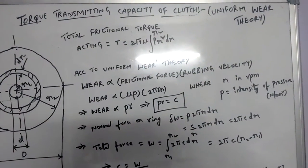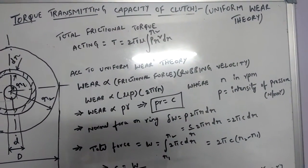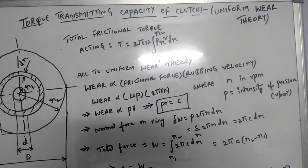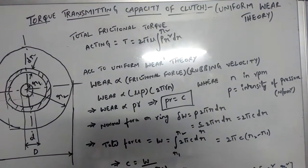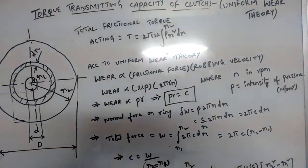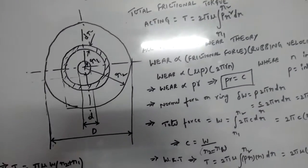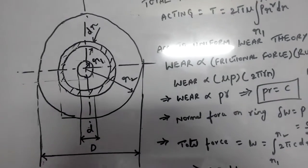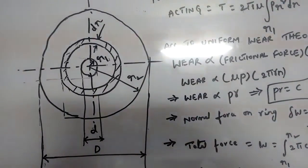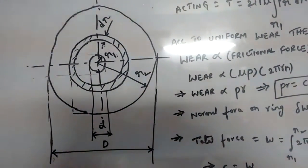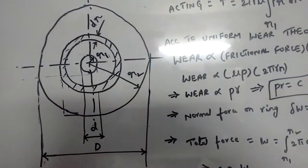We will discuss the torque transmitting capacity of a clutch with the help of uniform wear theory. Let us consider a frictional disc plate whose internal diameter is small d and external diameter is capital D.